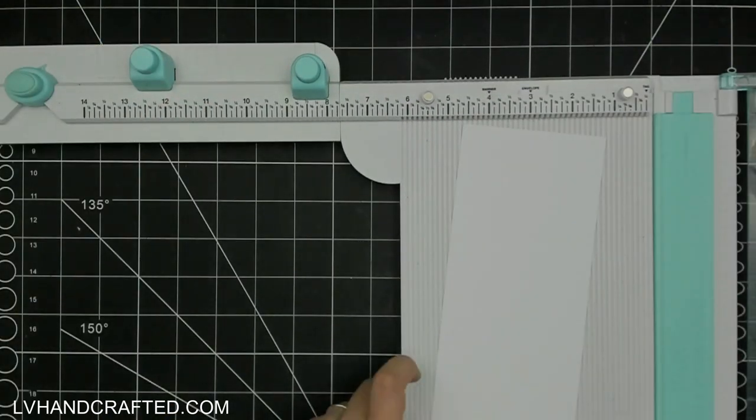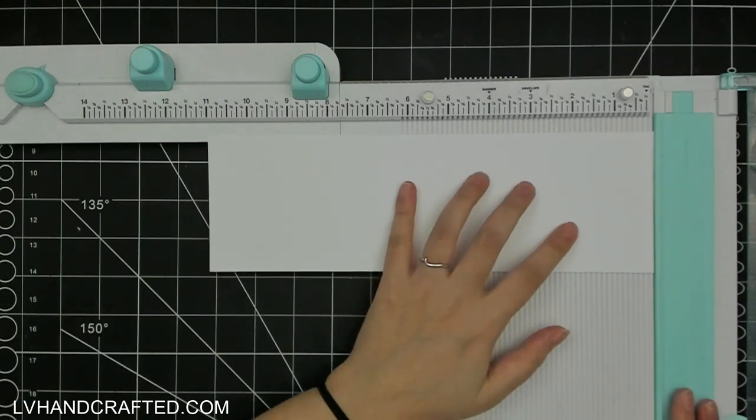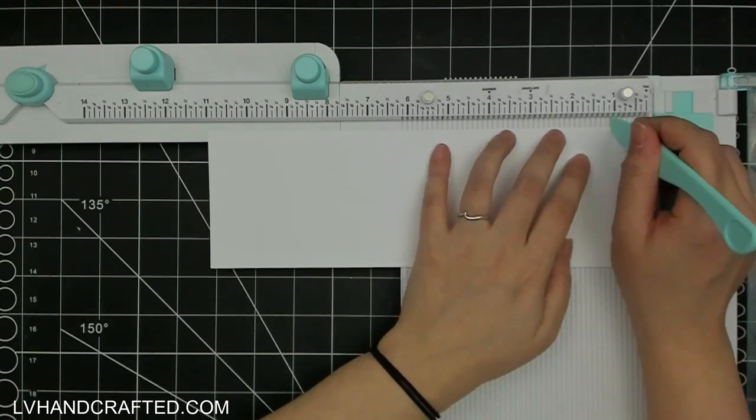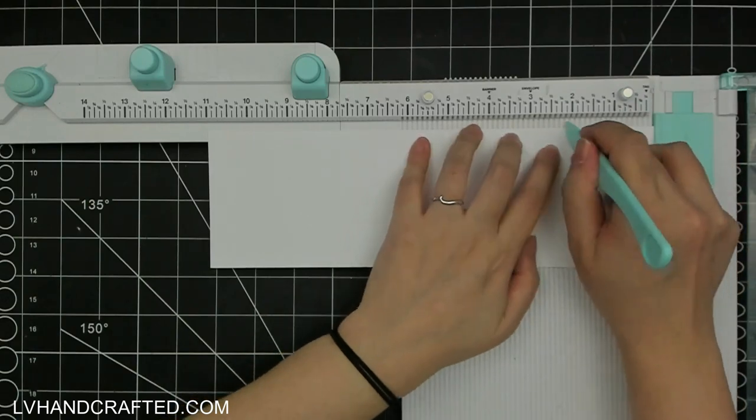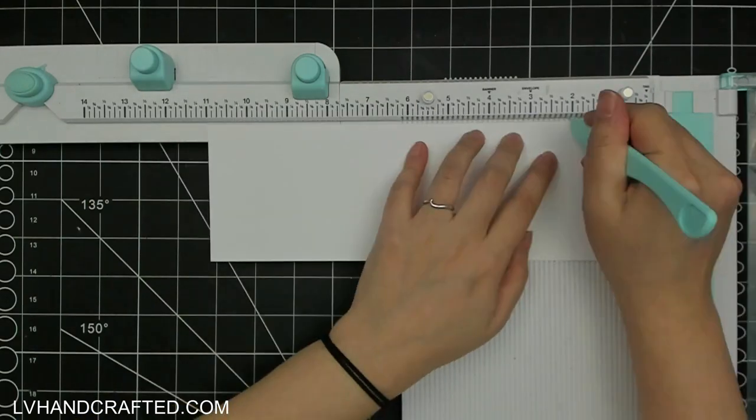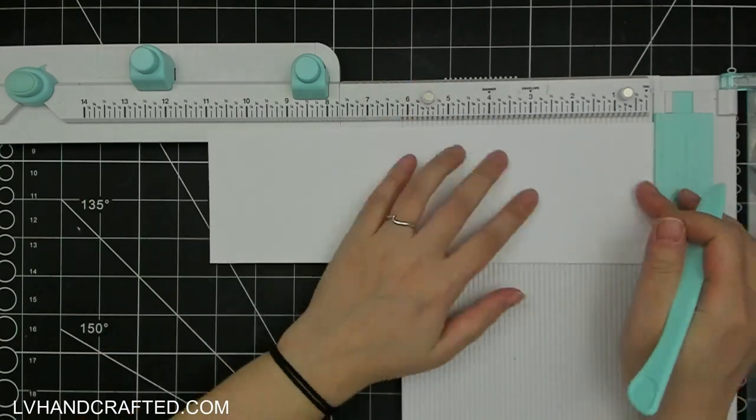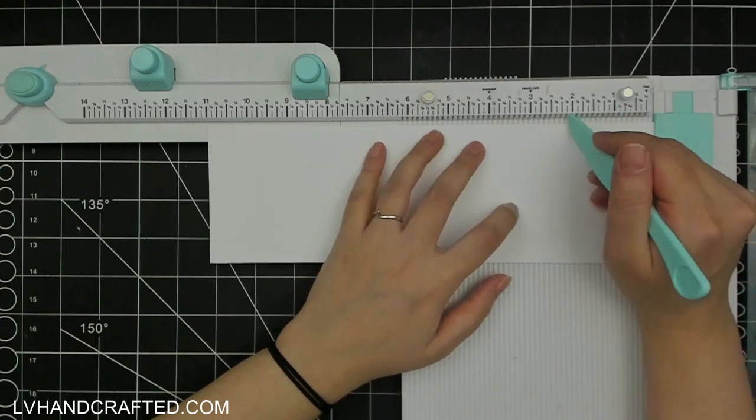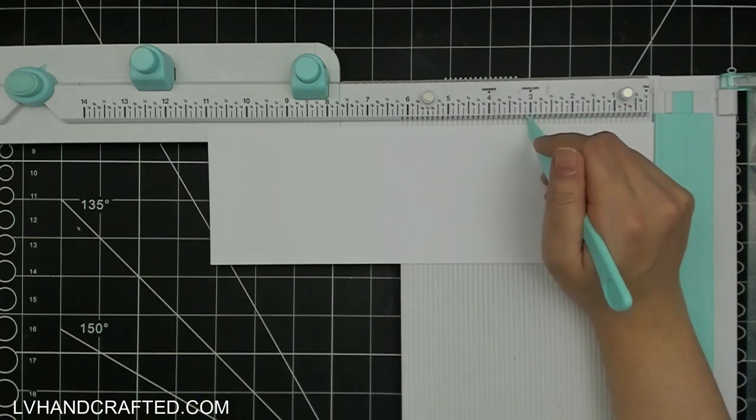I'm starting off by cutting this piece of heavyweight cardstock down to three and a half by eleven. Three and a half is the width of the mini slimline I like to make. These first two scorelines are for the first step. The rise and the fall I like to be equal, so I've scored that at one inch and two inches.